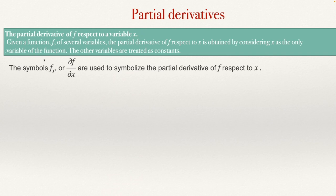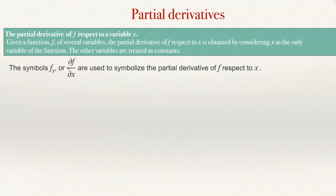We're going to use this symbol. For example, if the function is f, I can put f of x. This will be the partial derivative of f with respect to x. Obviously, with respect to y, we put y here. Or, we can use the small Greek letter delta. There is a delta that is the capital delta, but this is the small delta in Greek. We use it for the partial derivative. So, it will be the partial derivative of f, and here at the bottom you can read 'with respect to x.'